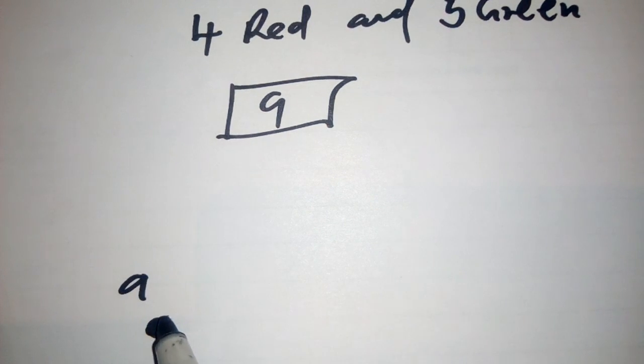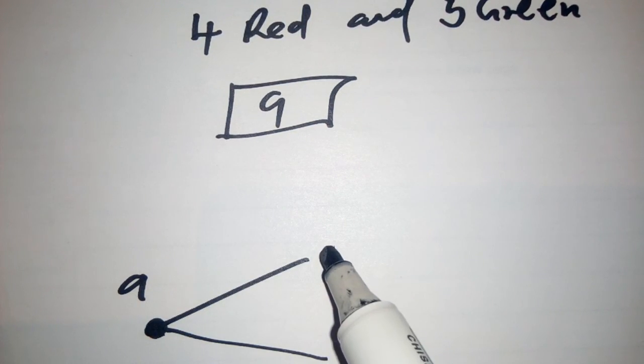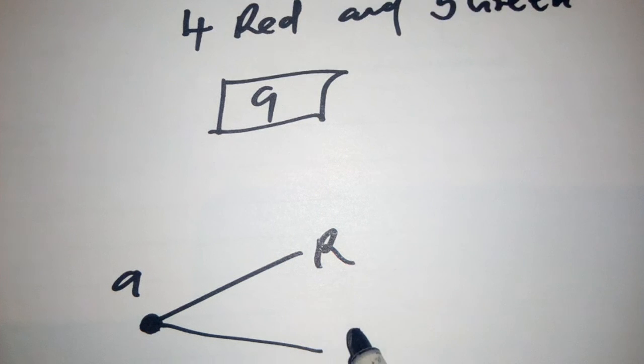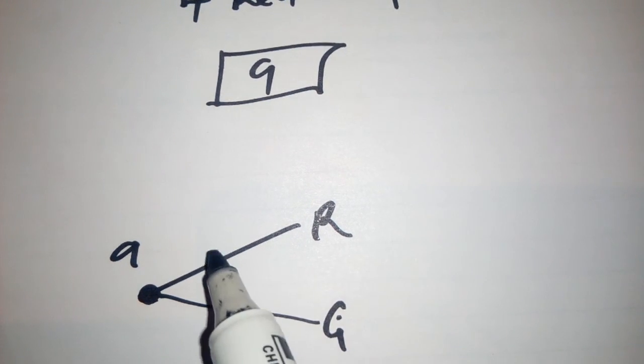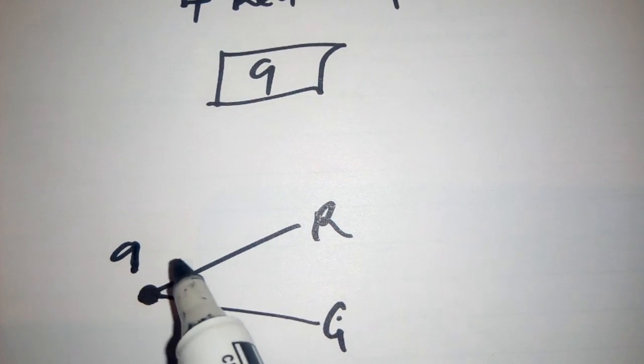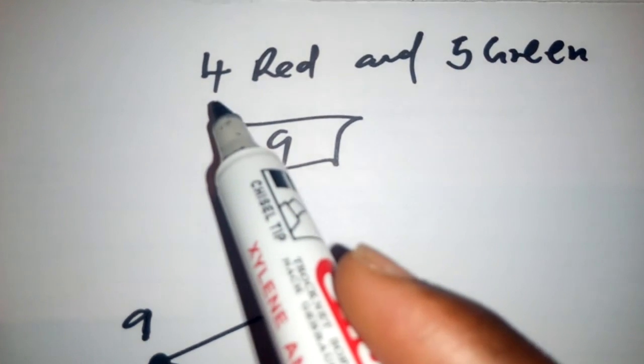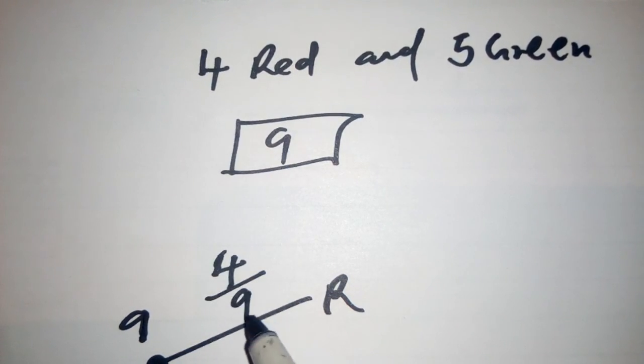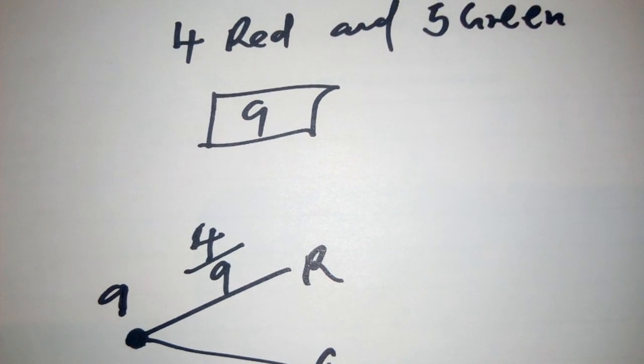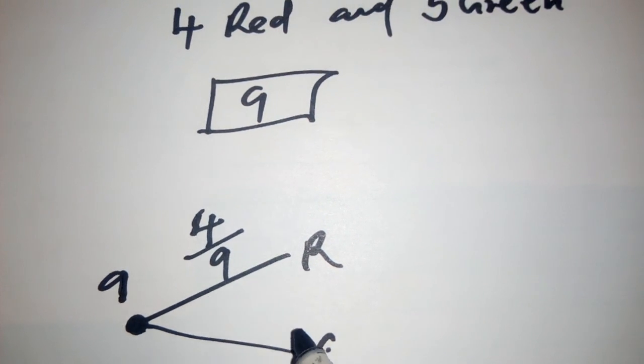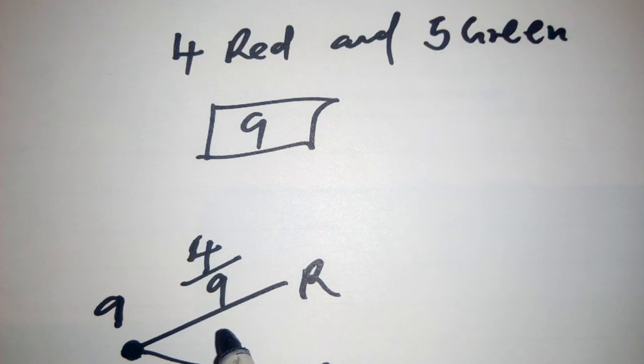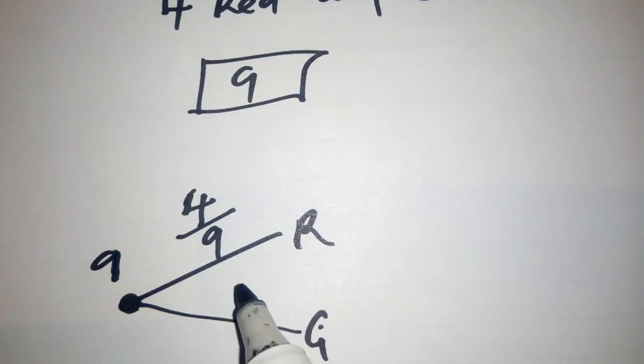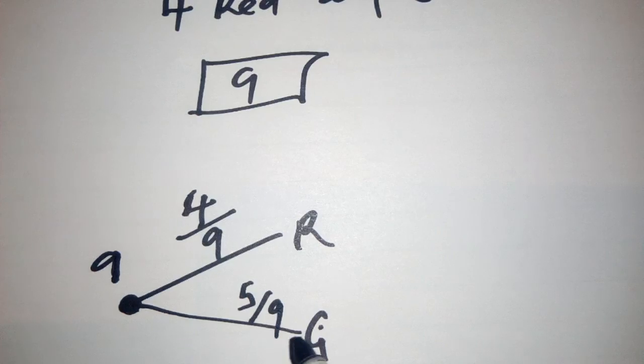Here, there are nine pens. There's probability of picking red or green. What is the probability of picking red? You write the total number of red, which is 4, over the total number of pens in the box. The probability of picking green is 5 over 9.